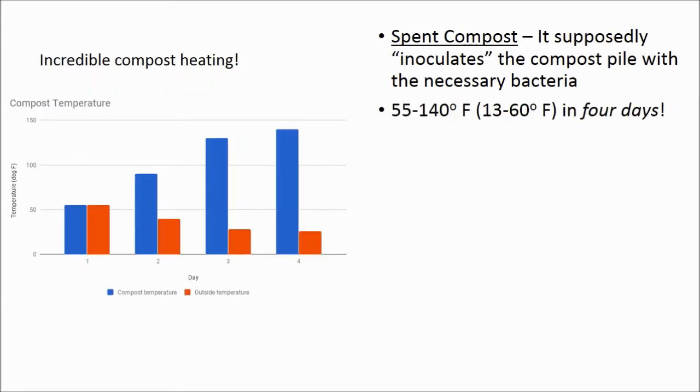This compost mixture heats up incredibly fast. I built the pile on a relatively warm day, which was 55 degrees Fahrenheit or 13 degrees Celsius. A winter storm rolled through Colorado on day three, but it didn't stop the compost from heating up. After four days, the compost reached 140 degrees Fahrenheit or 60 degrees Celsius, even though the outside temperature was only 26 degrees Fahrenheit or negative three Celsius.